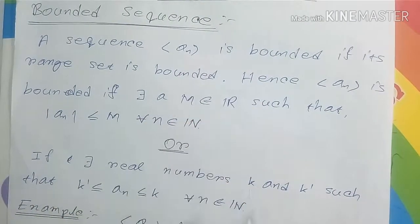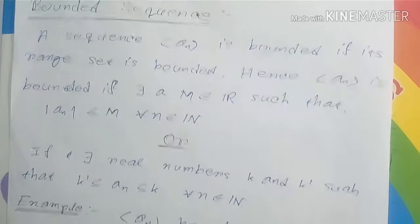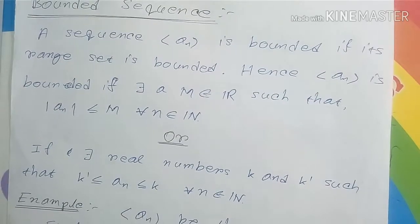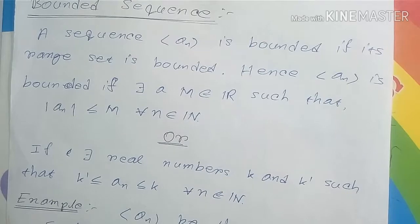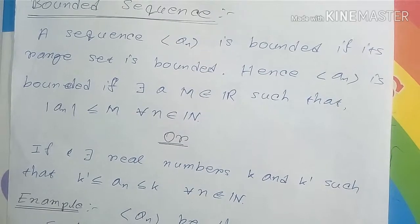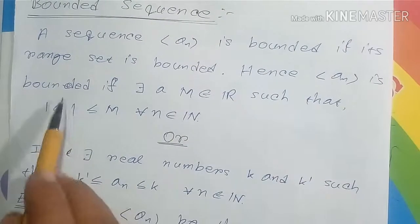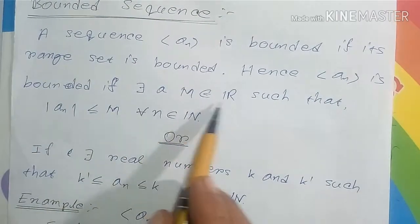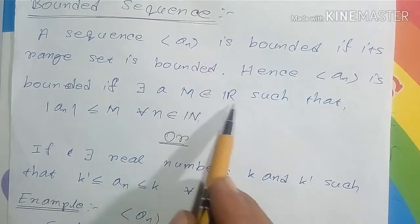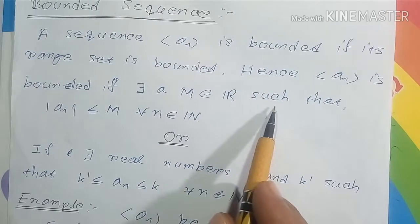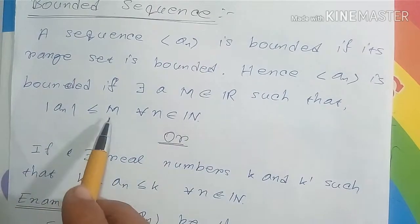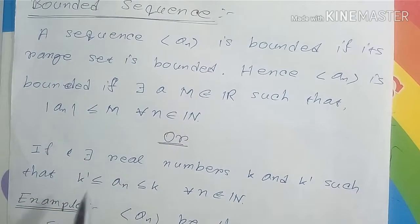A sequence a_n is bounded if its range set is bounded. For a_n = 1/n, all elements are less than or equal to 1, so M = 1 works. Hence a_n is bounded: there exists a real number M such that |a_n| ≤ M for all n belonging to the natural numbers.